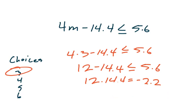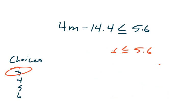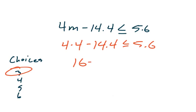Let's take a look at 4 and see if 4 also works. It might, but let's test it out. The way we do that is 4 times 4, that's 4 times m, minus 14.4. Is that less than or equal to 5.6? Well, if we do our test, 4 times 4 is 16. And 16 minus 4.4.